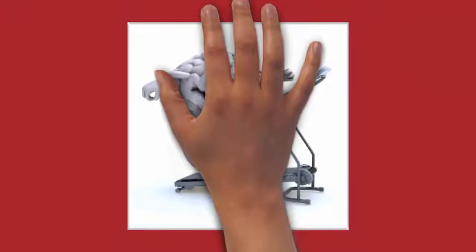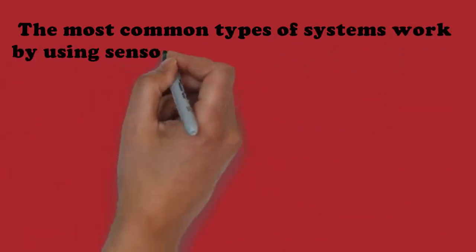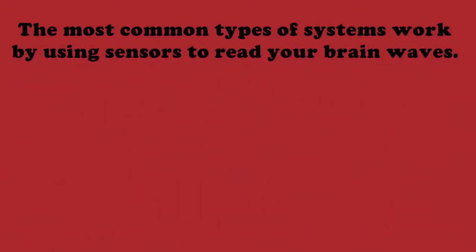Neurofeedback exercises the brain to be in better shape. How does it work? The most common types of systems work by using sensors to read your brain waves. Small metal disks are applied to the scalp using a tiny amount of water-soluble paste.